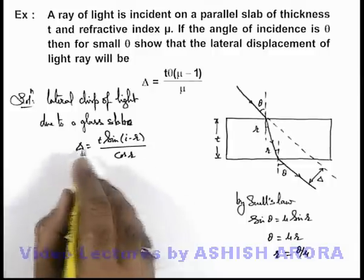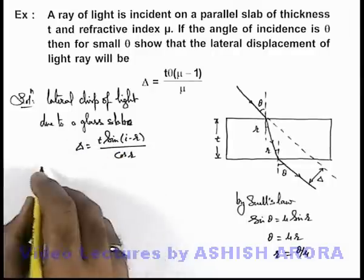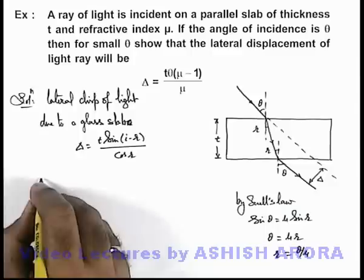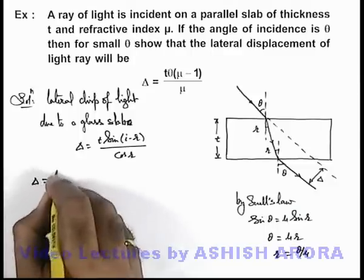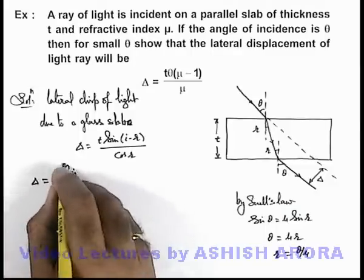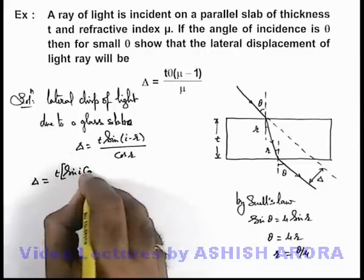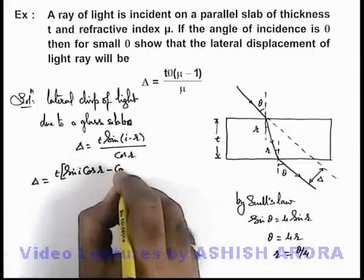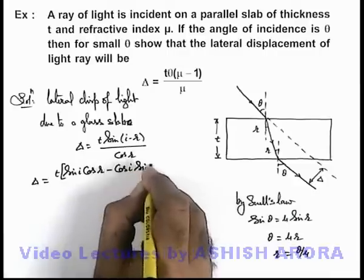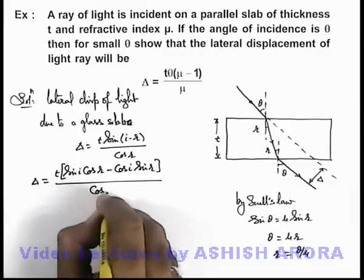Now in this expression as the angles are very small if we open this sin(i - r), this can be given as t [sin i cos r - cos i sin r] / cos r.